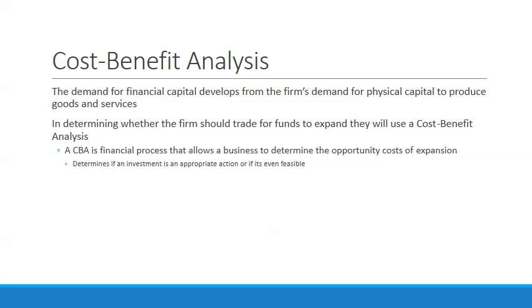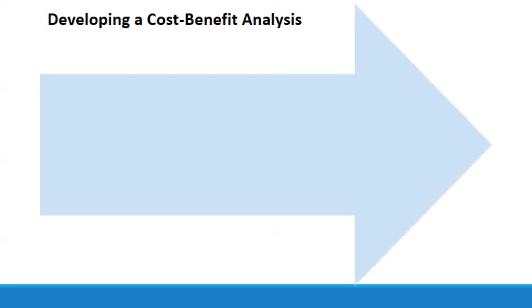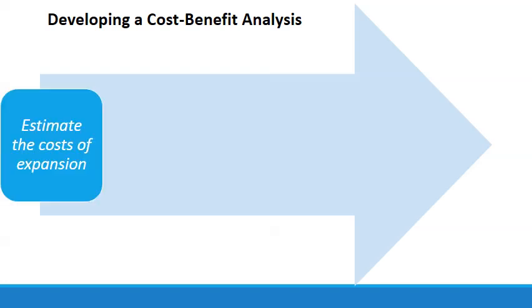The CBA allows firms to compare multiple projects and places a monetary value on all aspects of a decision, including the value over time — essentially evaluating opportunity cost. When developing a CBA, you first estimate the cost of expansion as accurately as possible, preferably estimating a little over rather than under, since coming in under budget means needing more money.